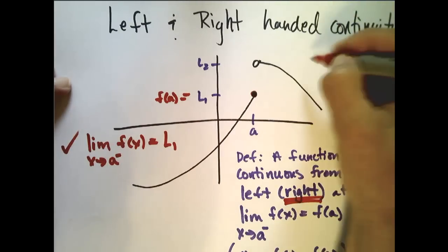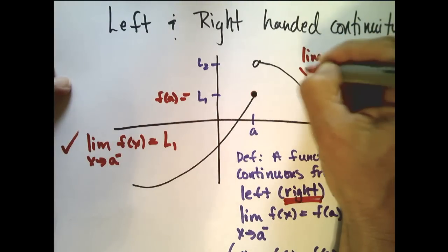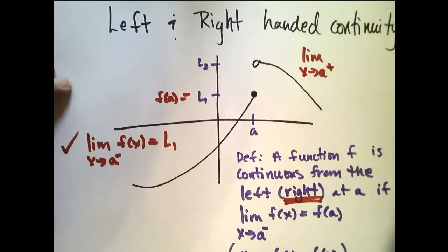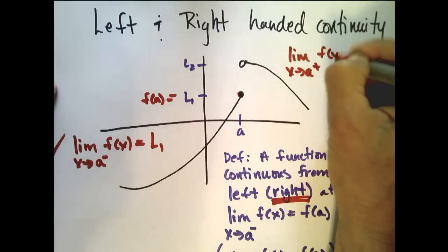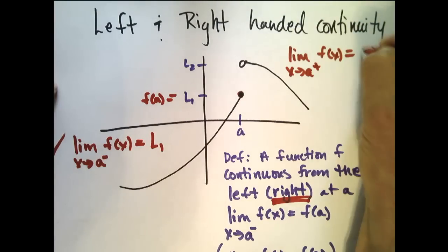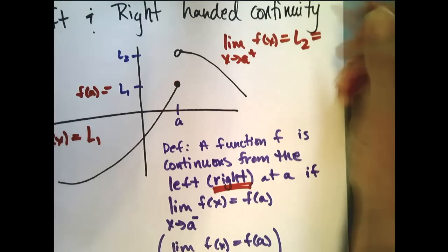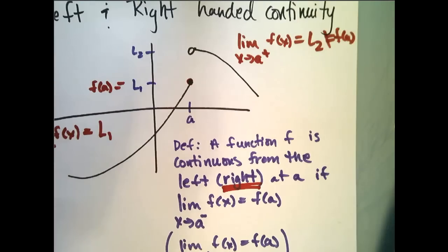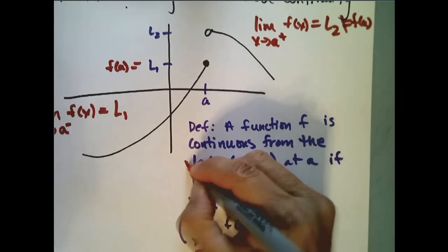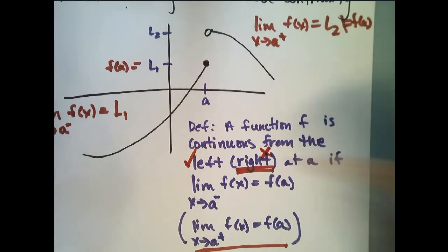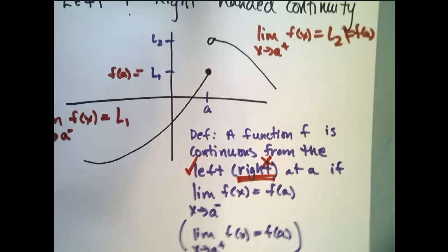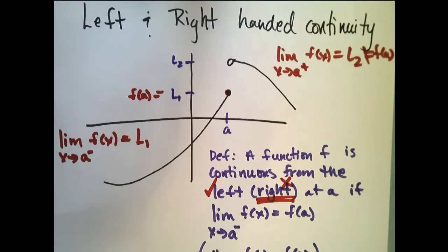Let's see what happens from the right. The limit as x approaches a from the right of f of x equals l2, which is not f of a. So my function is continuous from the left and is not continuous from the right.